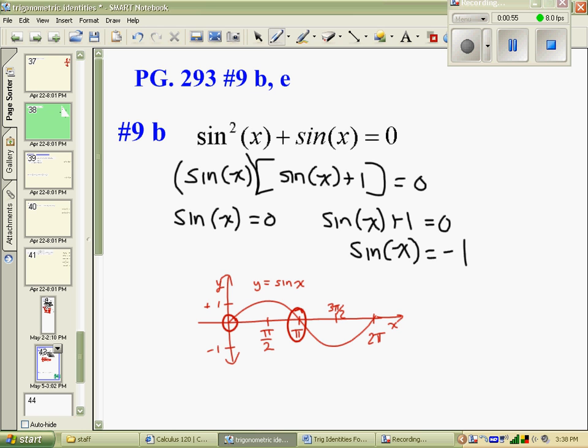Now, where is sine going to be equal to negative 1? In blue, we will notice that it's at negative 1, at 3π over 2.